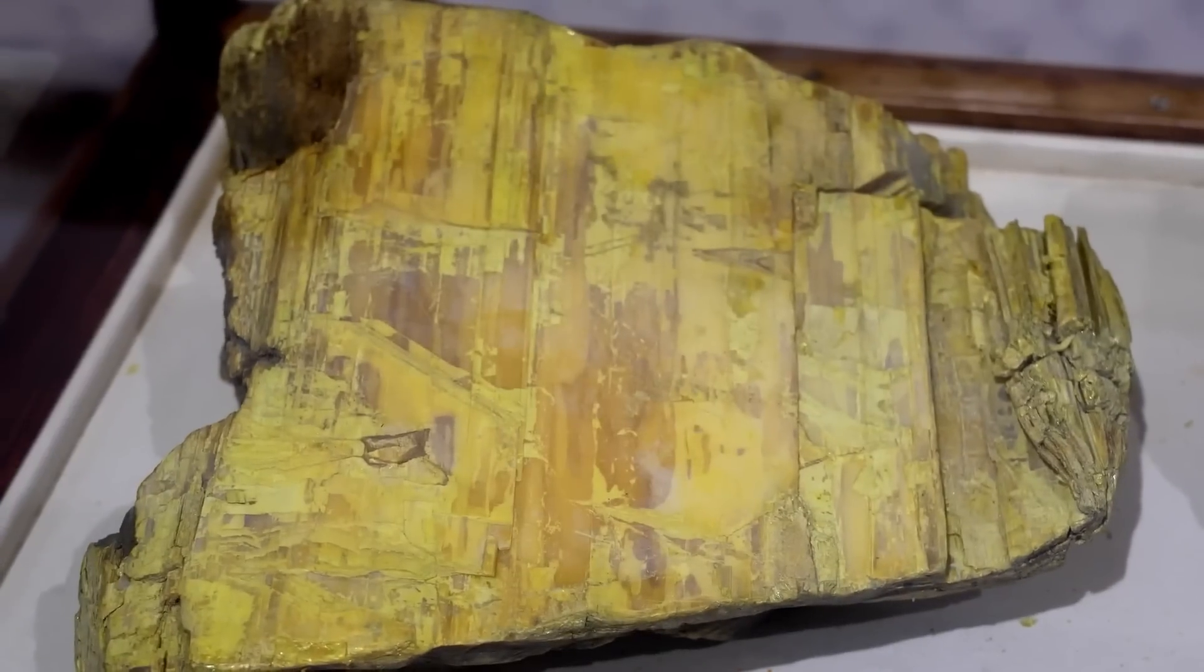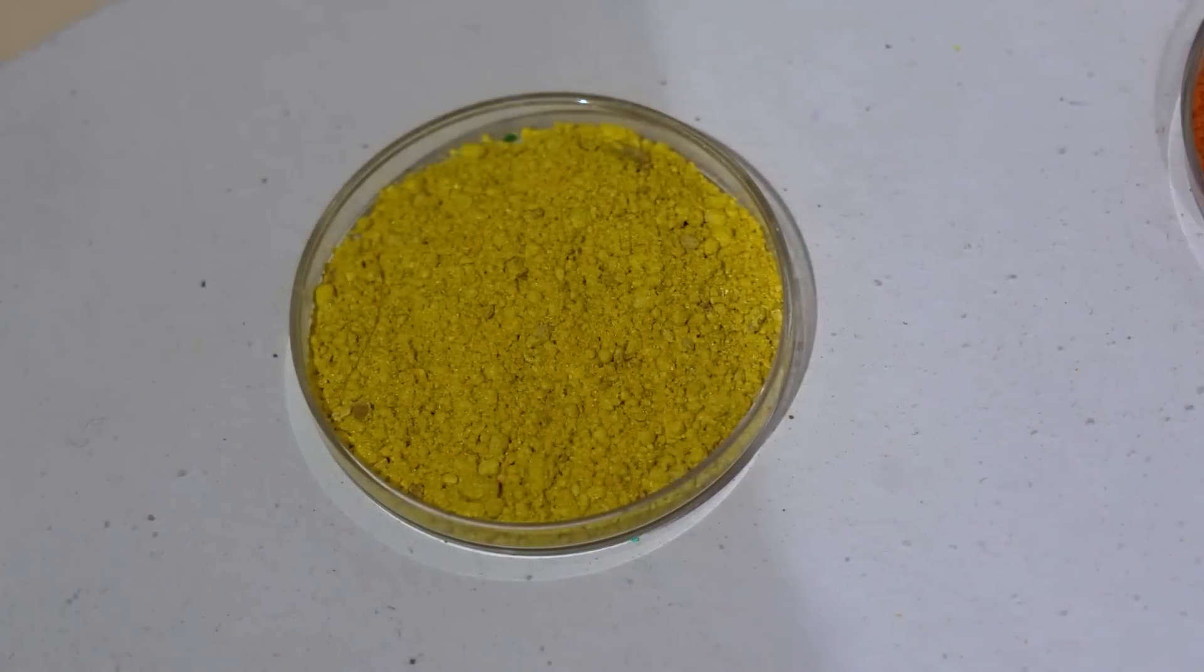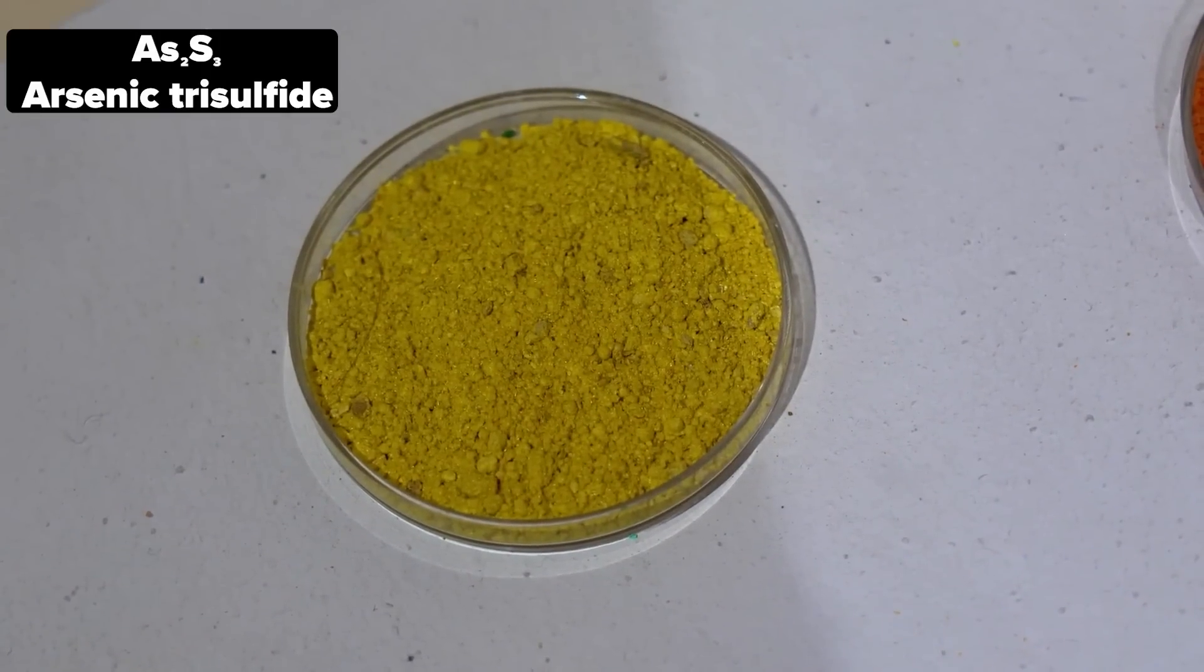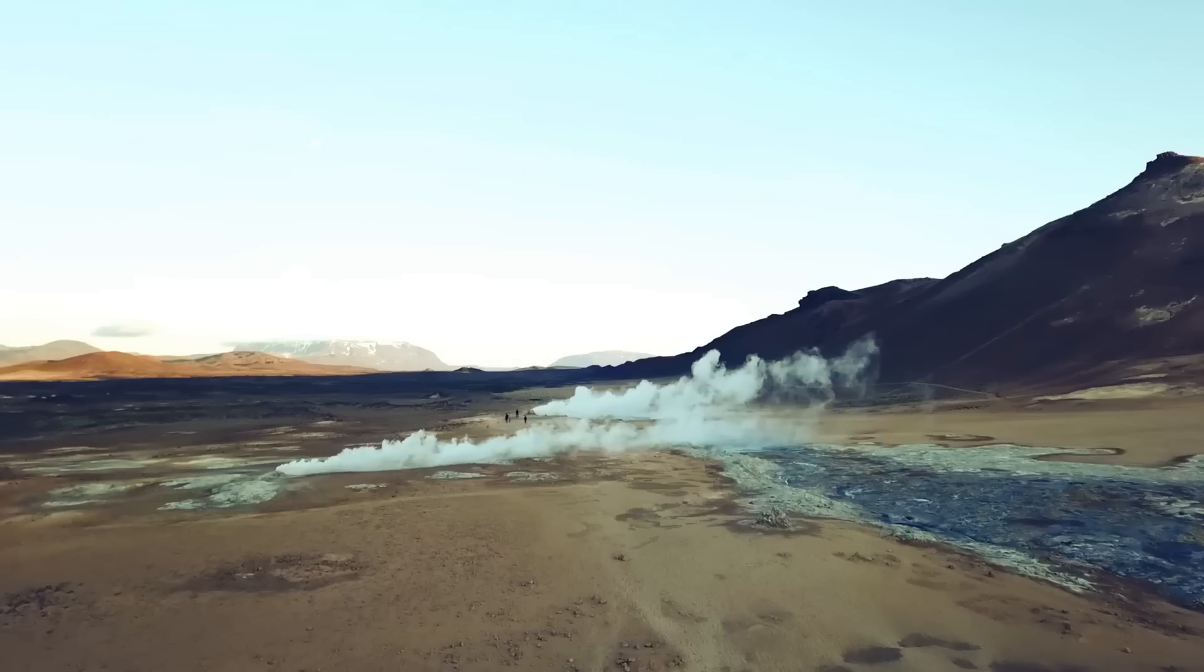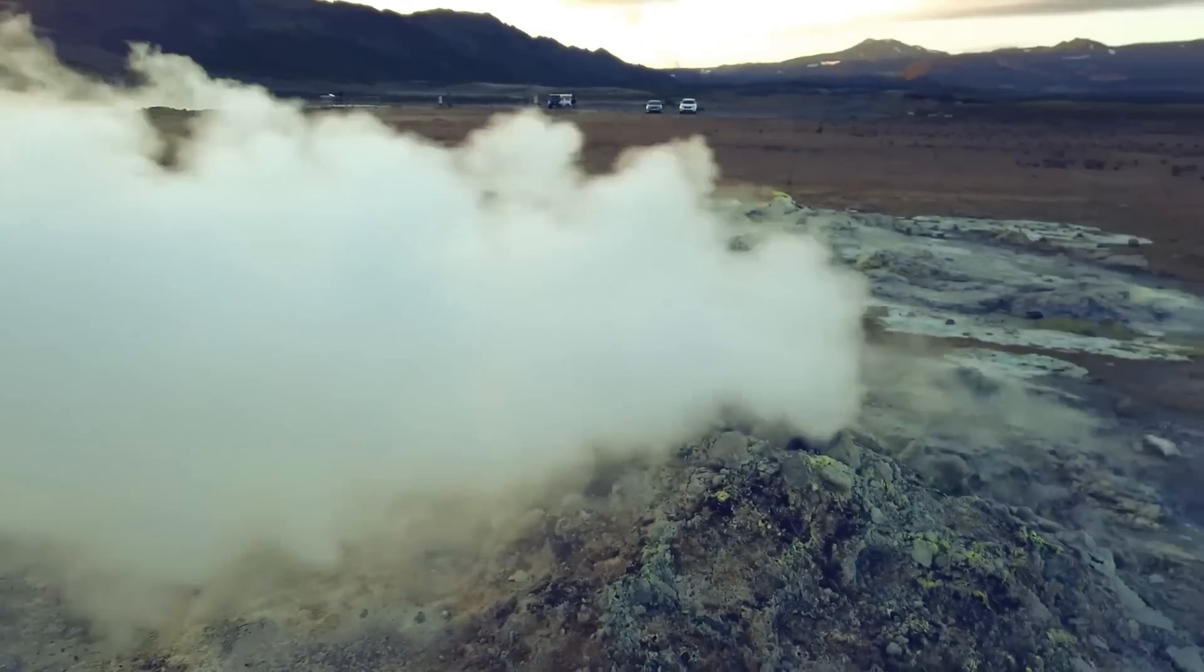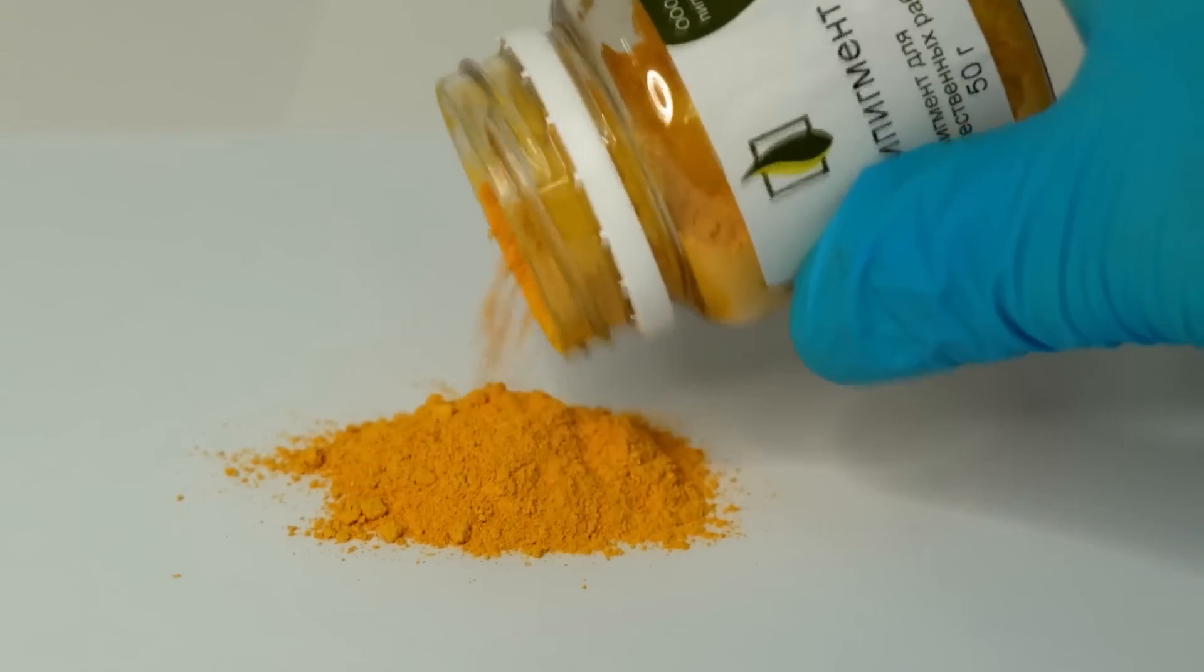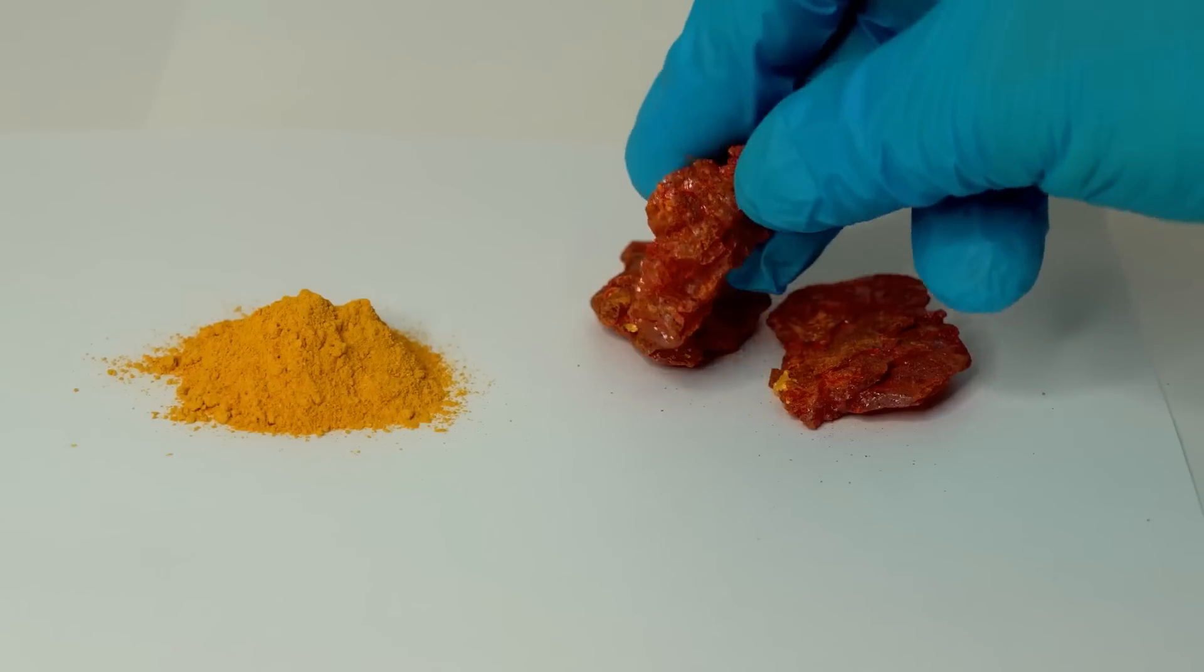Besides cinnabar, there's also a very bright and toxic natural pigment, namely the orpiment. From a chemical point of view, it is a naturally occurring arsenic trisulfide compound, and you can find it near geothermal sources or steaming sulfur fumaroles. Like cinnabar, this pigment is very toxic and dangerous for humans, which however doesn't stop its use.